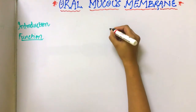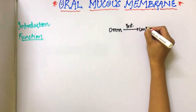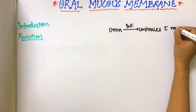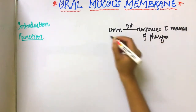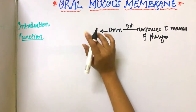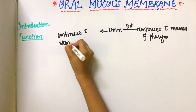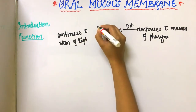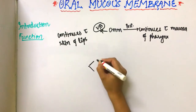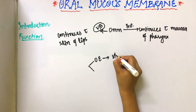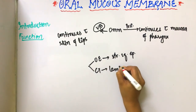Now, what is the extent of oral mucous membrane? Posteriorly, it continues with the mucosa of the pharynx, and in the anterior part it continues with the skin of the lips, which is also known as the vermilion border. So these are the two extents of oral mucous membrane. It has two parts: the oral epithelium, which is usually made of stratified squamous epithelium, and the connective tissue, which is the lamina propria.